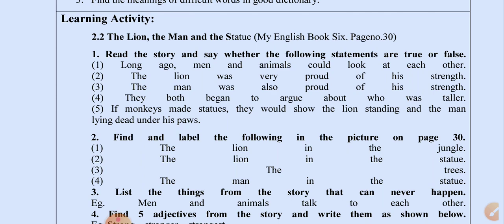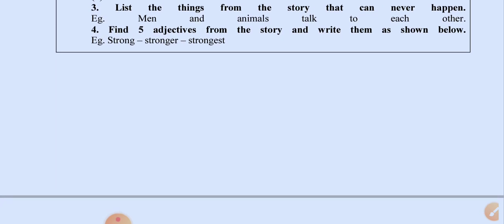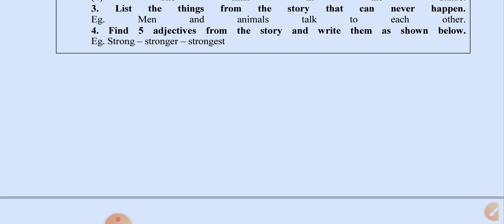The trees, the man in the statue — label these items. List the things from the story that can never happen in real life, and write them as shown below.